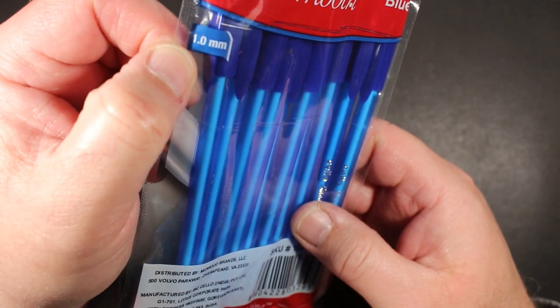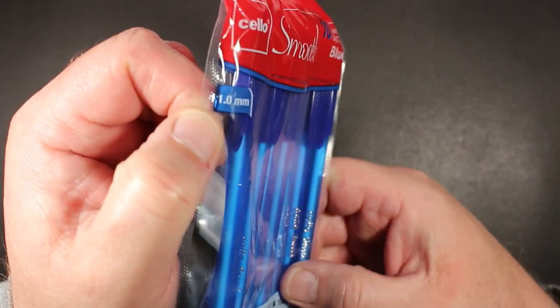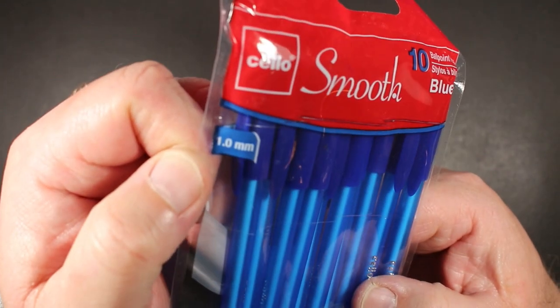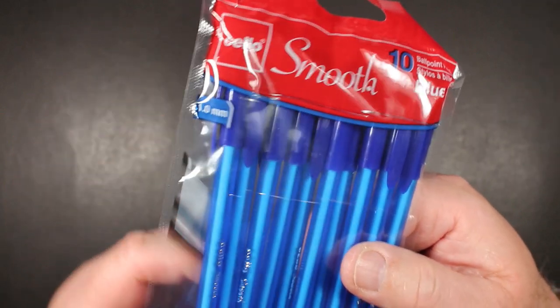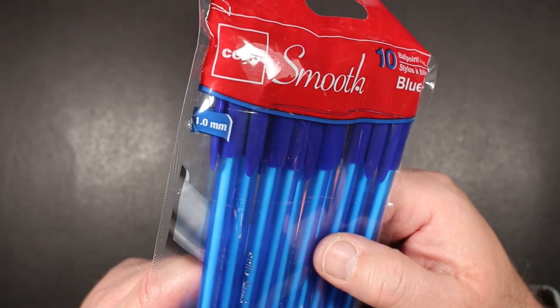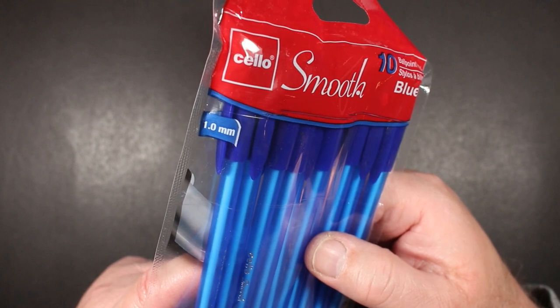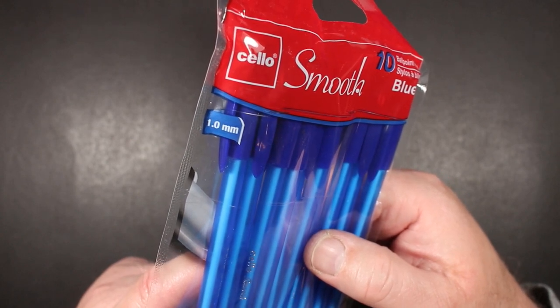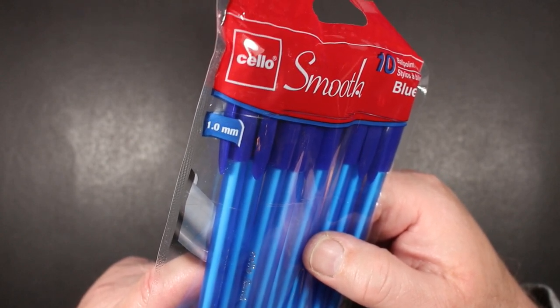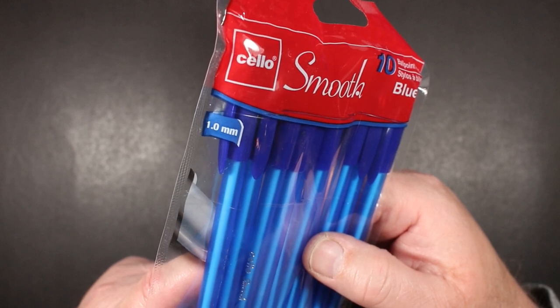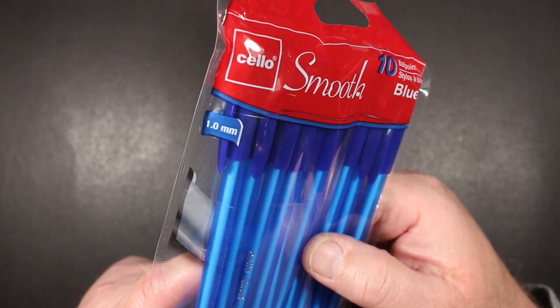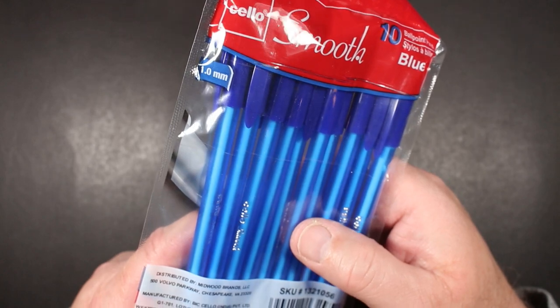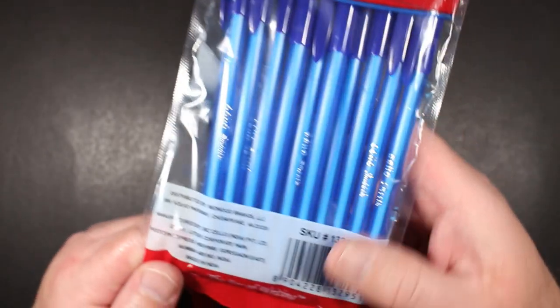This is a 1.0 millimeter ballpoint. That is the same standard as a Bic Crystal or Bic Round Stick medium point, Paper Mate Write Brothers, and Inkjoy. Those are all pretty much 1.0 millimeter.